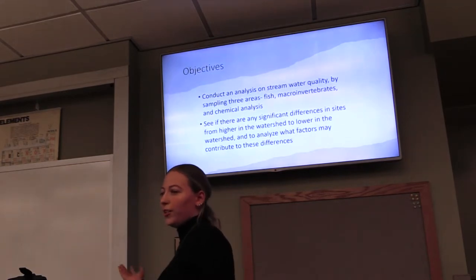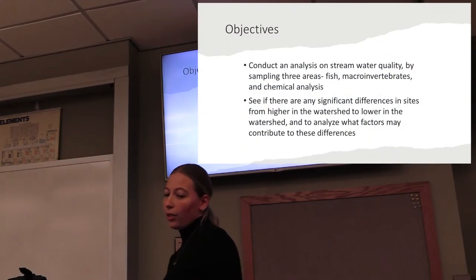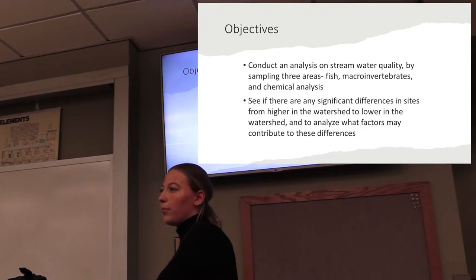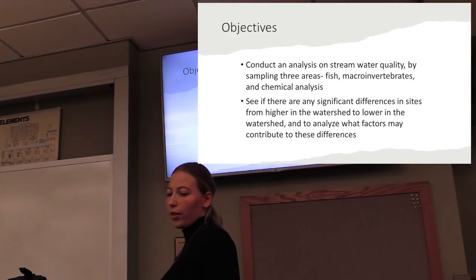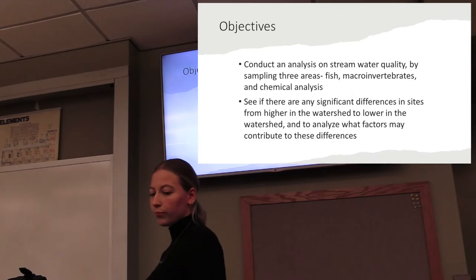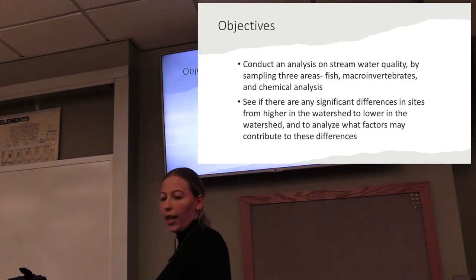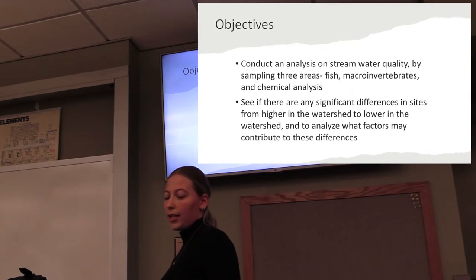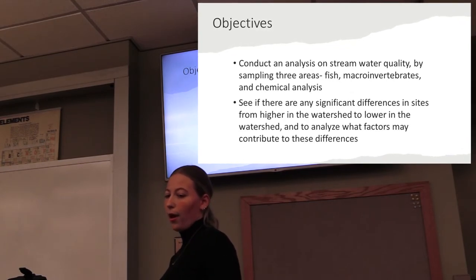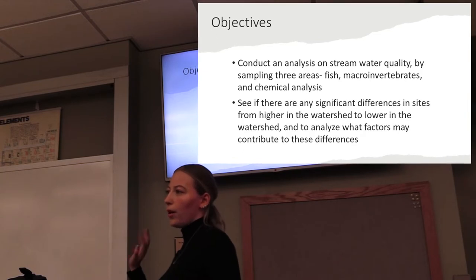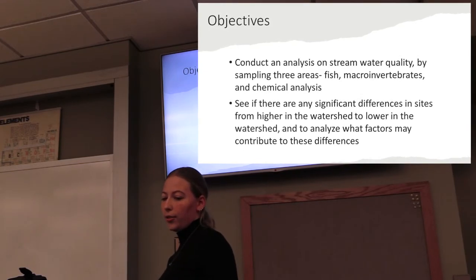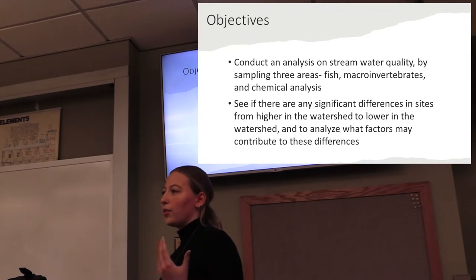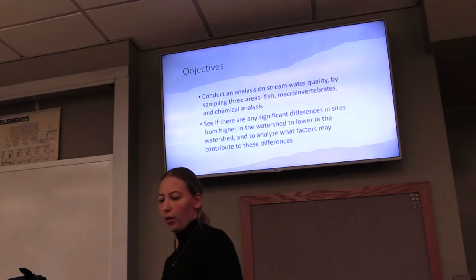We wanted to conduct an analysis on the stream water quality. We did this by sampling three different areas: fish, macroinvertebrates, and chemical analysis. We basically wanted to see if there were any significant differences among the sites from higher up in the watershed moving down, and to analyze what factors could contribute to these differences if they were present.